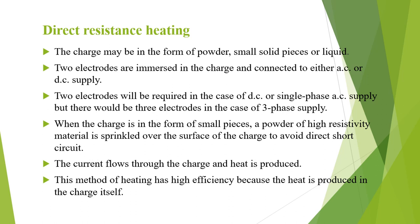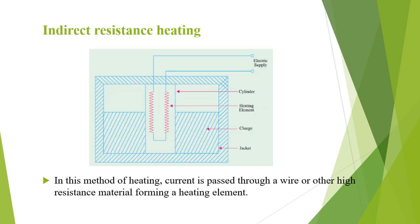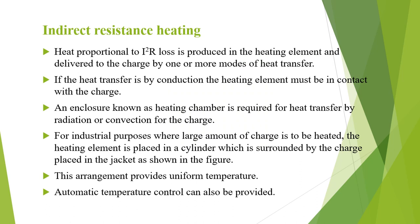Indirect resistance heating: in this method current is passed through a wire or other high resistance material which forms the heating element. The heat produced is due to I²R loss and is delivered to the charge by one or more modes of heat transfer. If heat transfer is by conduction, the heating element must be in contact with the charge. An enclosure known as a heating chamber is required for heat transfer by radiation or convection.